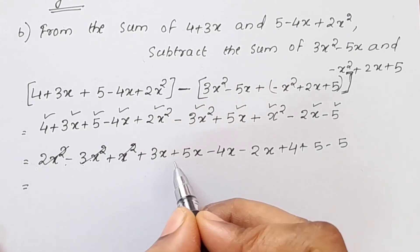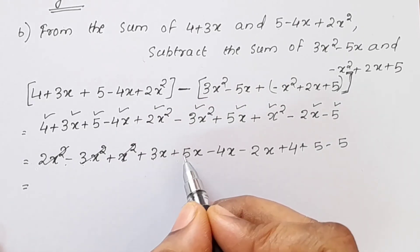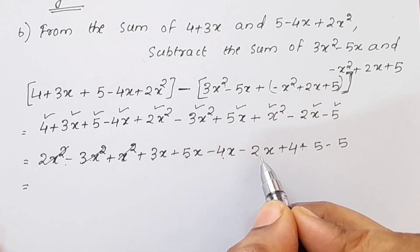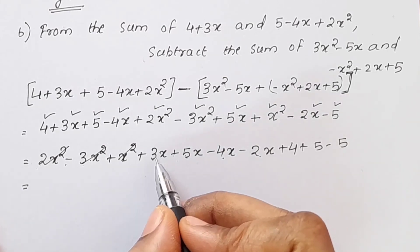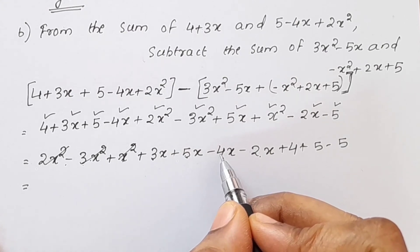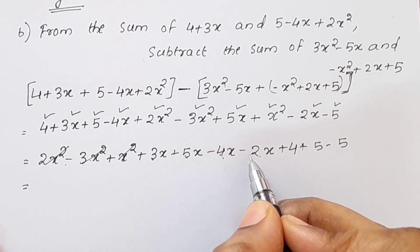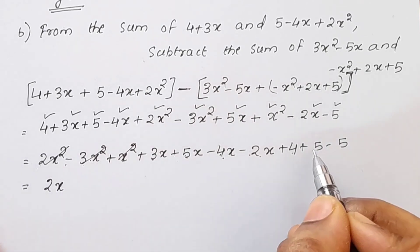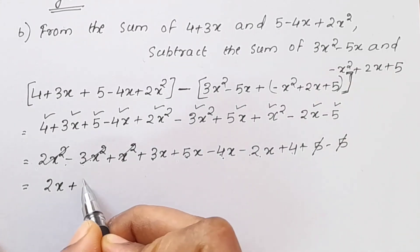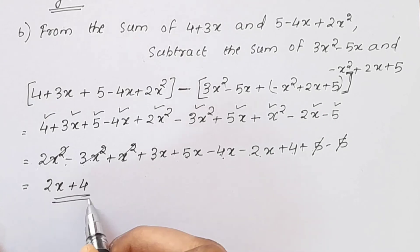5 plus 3 is 8. 8x minus 4x is 4x, minus 2x is 2x. Plus 5 minus 5 is 0. 2x plus 4 is the answer.